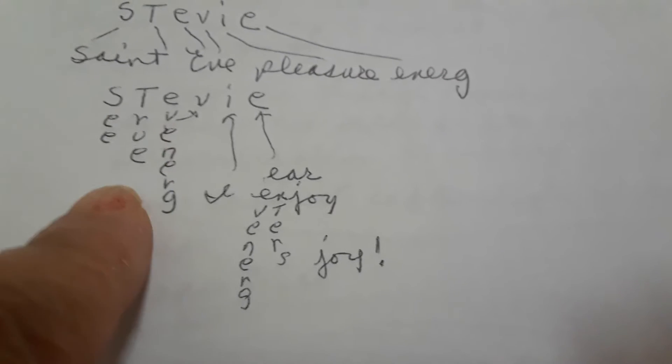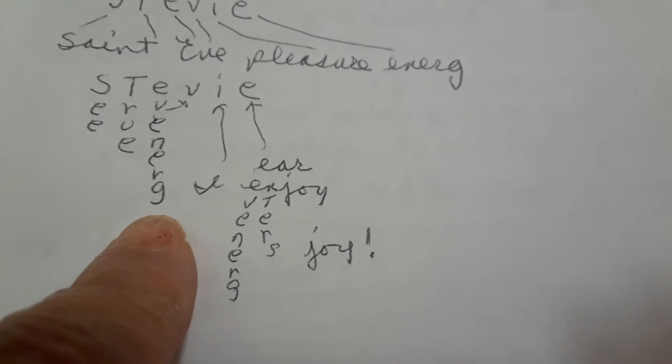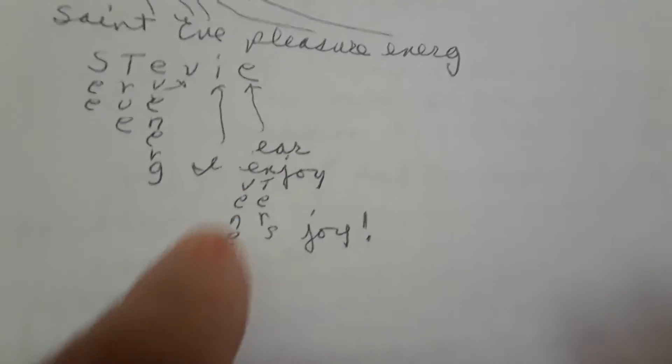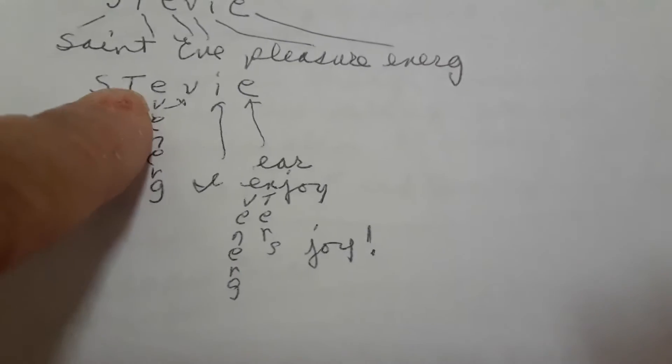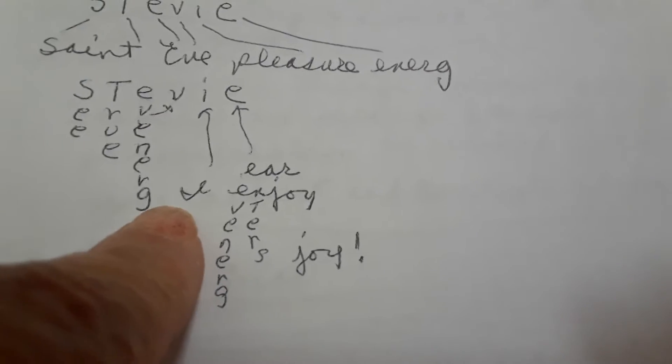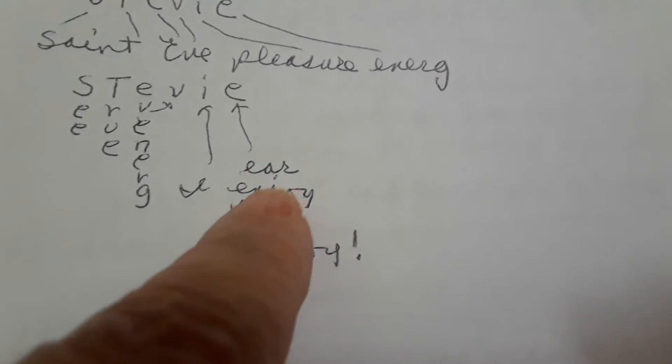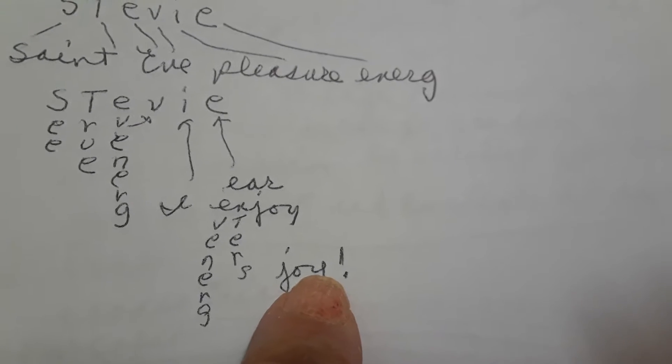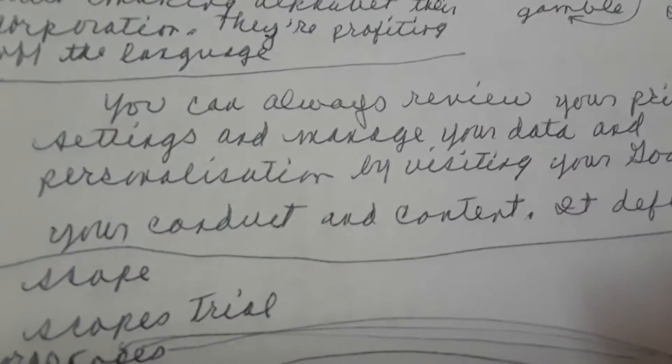S for see, T for true, E for Eve energy. I for eye, E for ear, enjoy, Eve energy. See, true, Eve energy. I, ear, enjoy, Eve energy enters joy. Okay, so you hear joy when Eve's energy is speaking, like now. Are you feeling joy that you learned that there's words within words, that there are meanings within words?